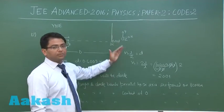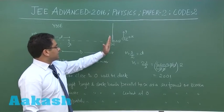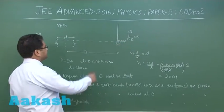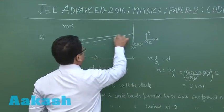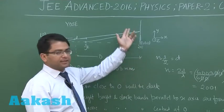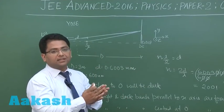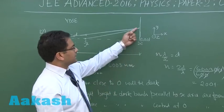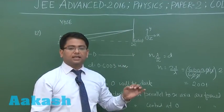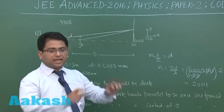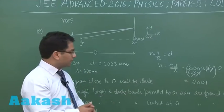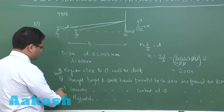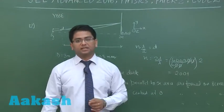Next, we need to comment on the locus of the fringe pattern formed on the screen. The screen is perpendicular to the line joining S1 and S2. For a given path difference, you would have a circular fringe, and throughout that circle at any given point the path difference is constant, with center at O. Since the screen is half, that corresponds to a semicircle. So option C is correct. That's about question 12.